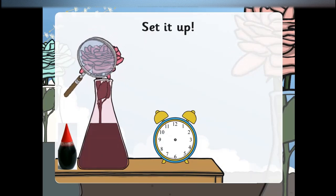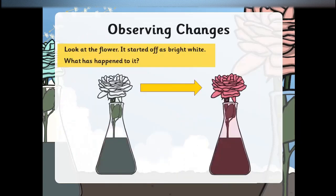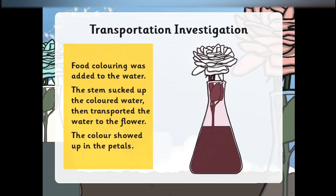Whoa! It's like magic! The color has changed. Now it's time for an observation. Look at the flower — it started off as a bright white color. What has happened to it? Food coloring was added to the water. The stem sucked up the colored water, then transported the water to the flower. Now the color has showed up in the petals.